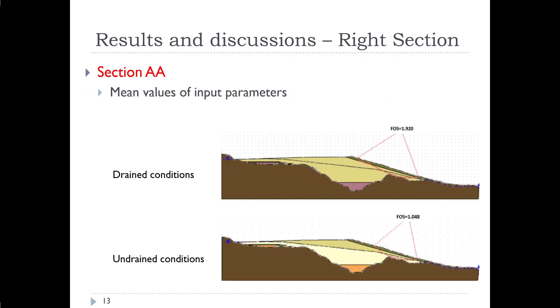So if we look now and we transition over to section AA, we're looking at just using the mean value of the input parameters. If we put in for drained conditions, we get a factor of safety of 1.9. And if we look at undrained conditions, we have a factor of safety of about 1.048, so approximately 1 even.